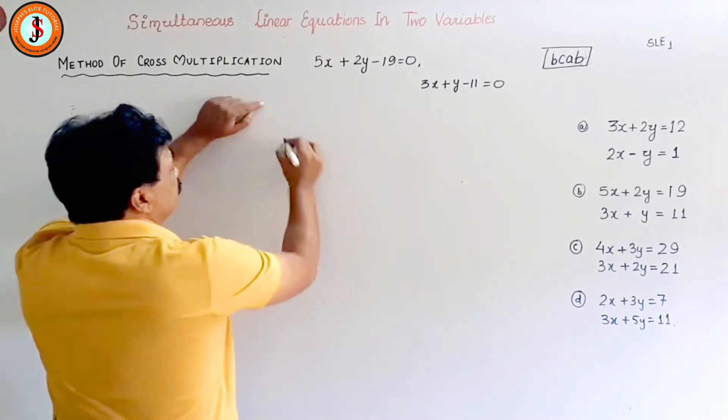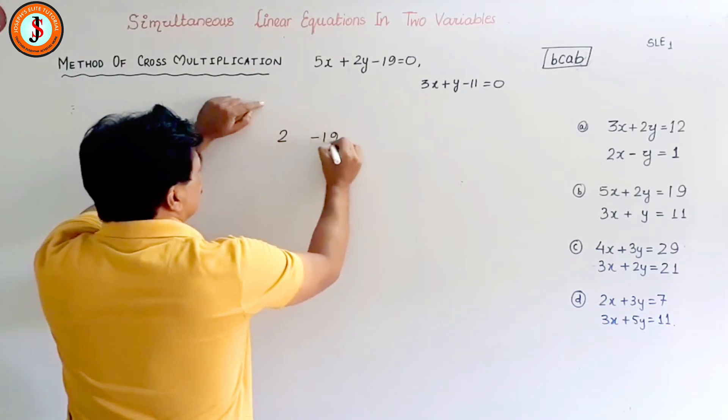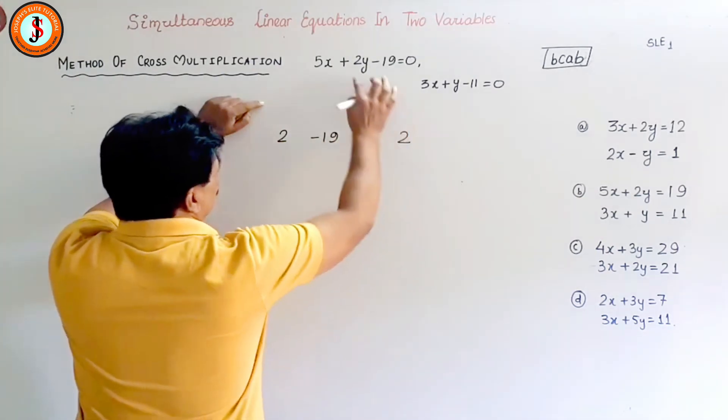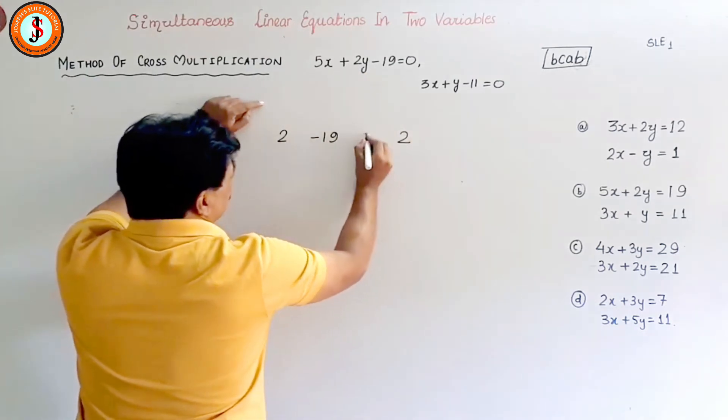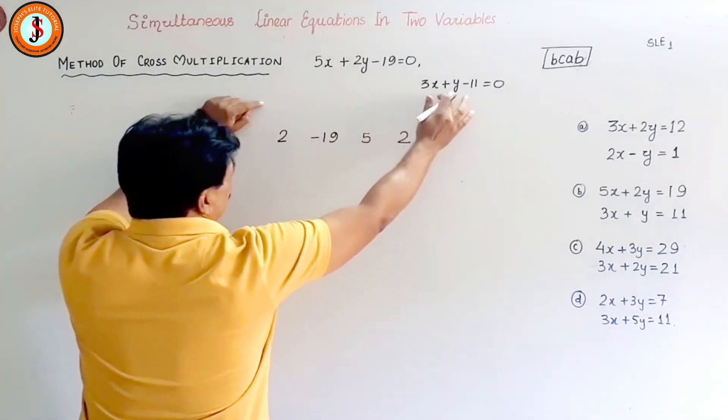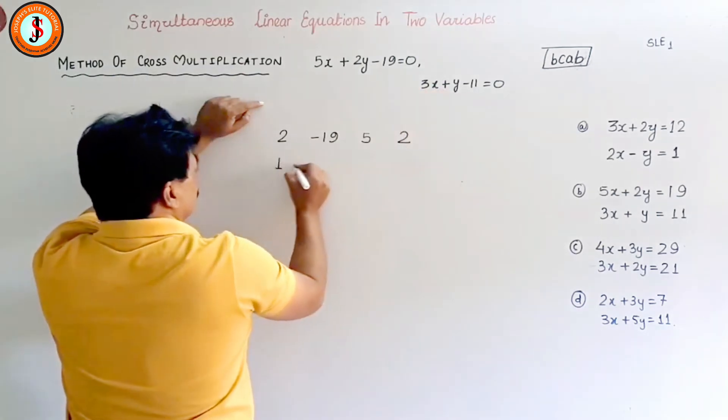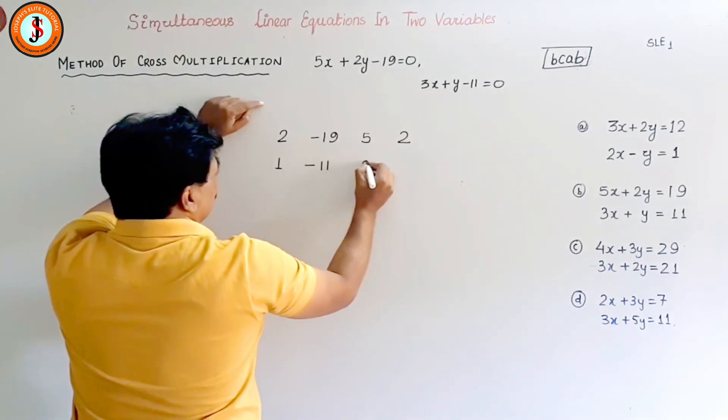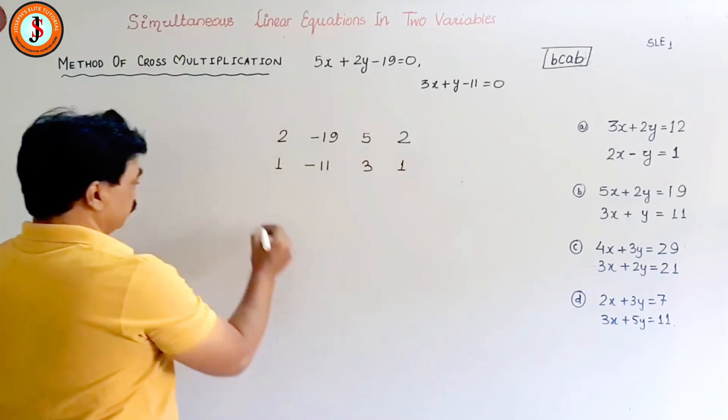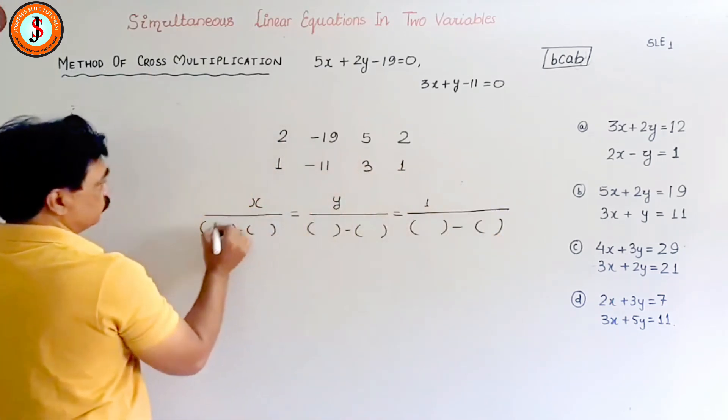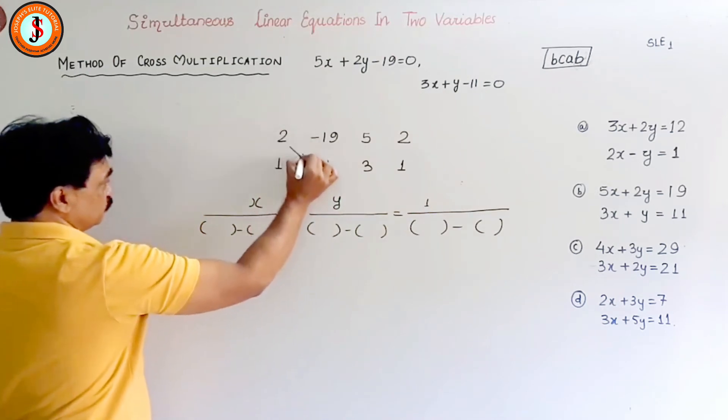So I write first b, c, a, and b. b, c, a, and b. So I've written it nicely. Now b means nothing is there, so plus 1. Minus 11 is c. a is 3. And then again plus 1. So minus 22.